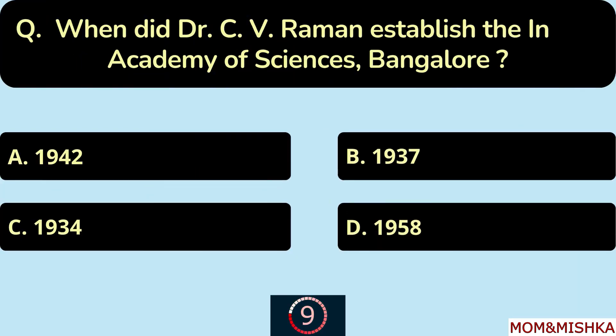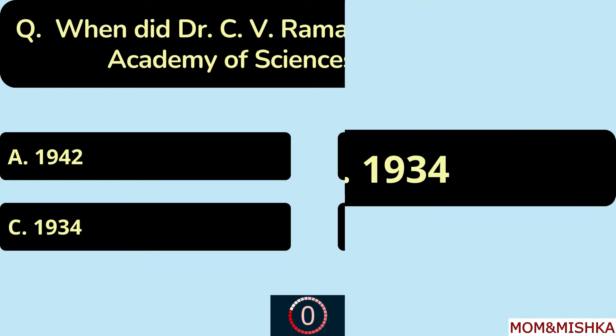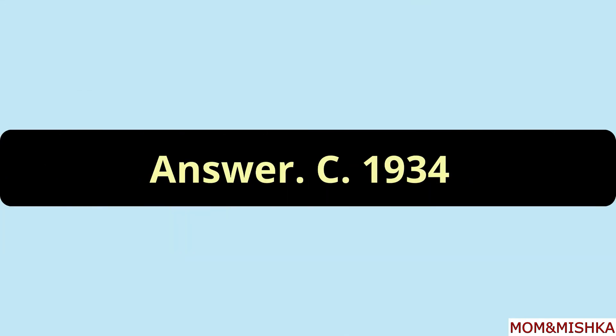When did Dr. C. V. Raman establish the Indian Academy of Sciences, Bangalore? In the year 1934, Option C.